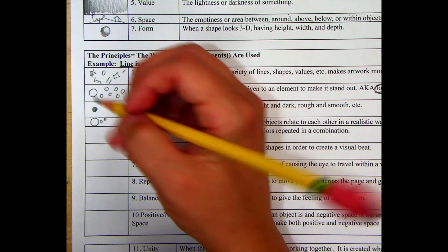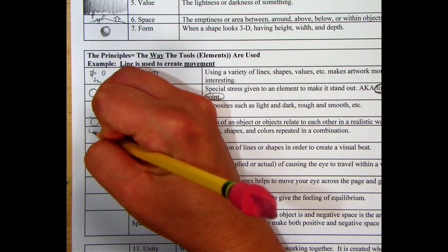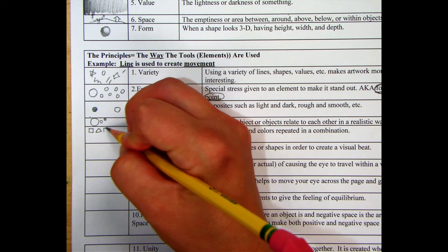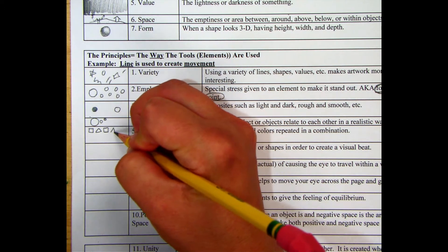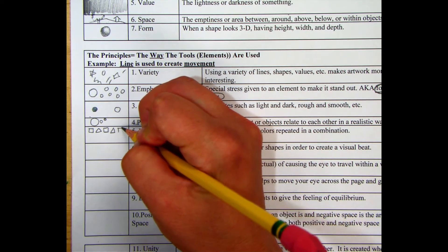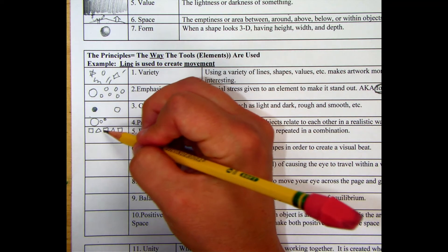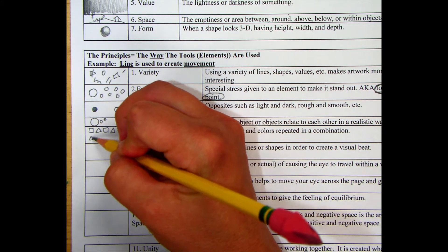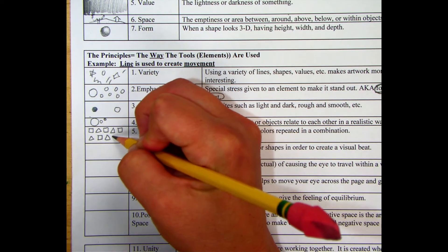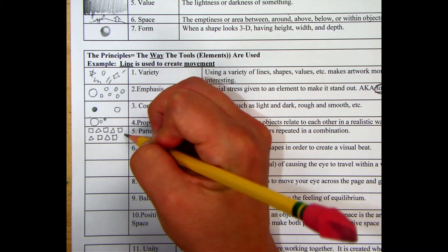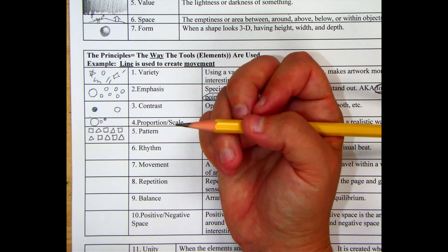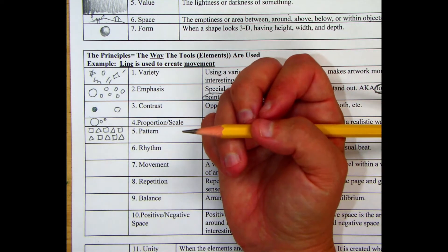And then you have pattern. So pattern is maybe with color, or maybe it's with shape, but revisiting those same elements in an identical pattern of some sort. Like maybe you have a pattern for the way that you do wrinkles on the face, or the way that you're going to do hair, you're going to have pattern in the background to create a different style.